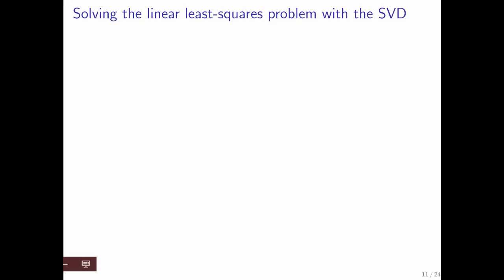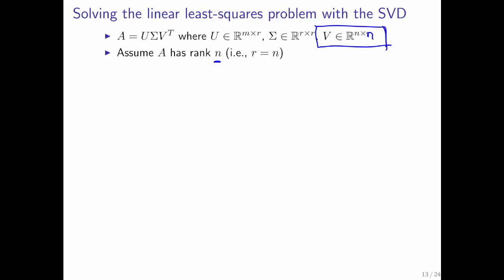You can also use the singular value decomposition to solve the linear least squares problem. What do we have there? Well, let's say that we have a matrix A and we know its singular value decomposition. And let's assume that A has rank n. And what that really means is that V is an n by n matrix. It's a square matrix that has orthonormal columns. And remember that that means that V, V transpose is the identity and V transpose is the inverse of V.